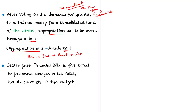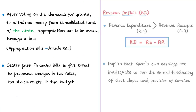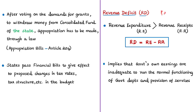State governments can also make changes to taxes levied, which can be given effect by passage of a financial bill. These are the constitutional provisions regarding the tabling of the state budget. Now let us move on to the concept of revenue deficit, which this news article states is around 21,000 crores for Tamil Nadu for the upcoming financial year.